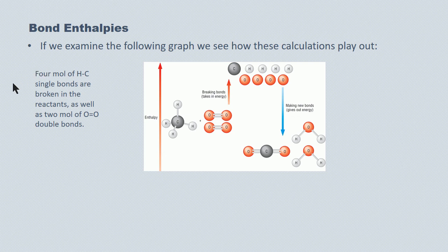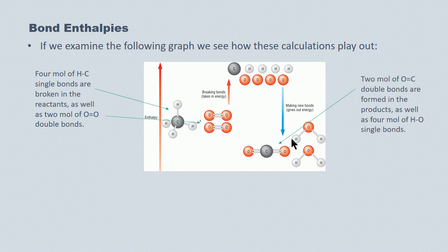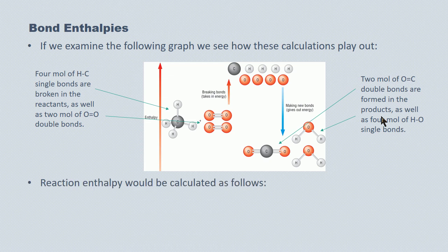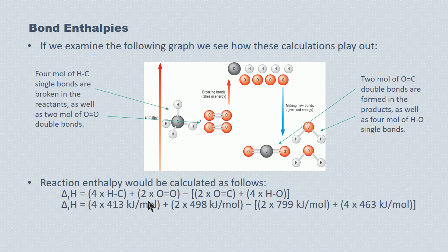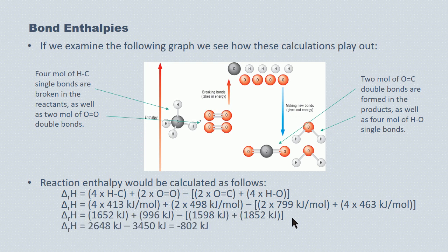So four moles of hydrogen-to-carbon single bonds and two moles of oxygen-to-oxygen double bonds are broken in the reactants, while two moles of carbon-to-oxygen bonds and four moles of hydrogen-to-oxygen bonds are formed in the products. We calculate the reaction enthalpy by adding the enthalpies of the bonds being formed and subtracting the enthalpy of the bonds being broken, recovering values from the bond enthalpy table. The enthalpy change for the overall reaction is negative 802 kilojoules.